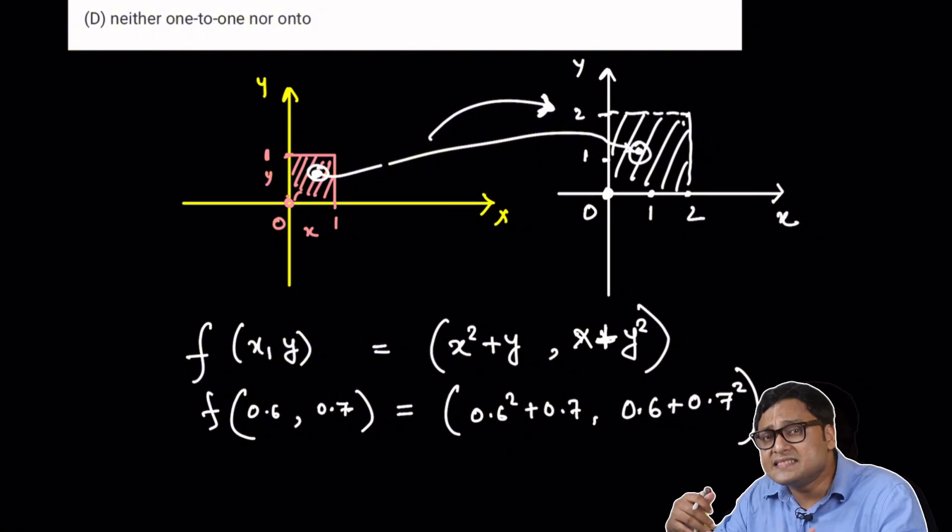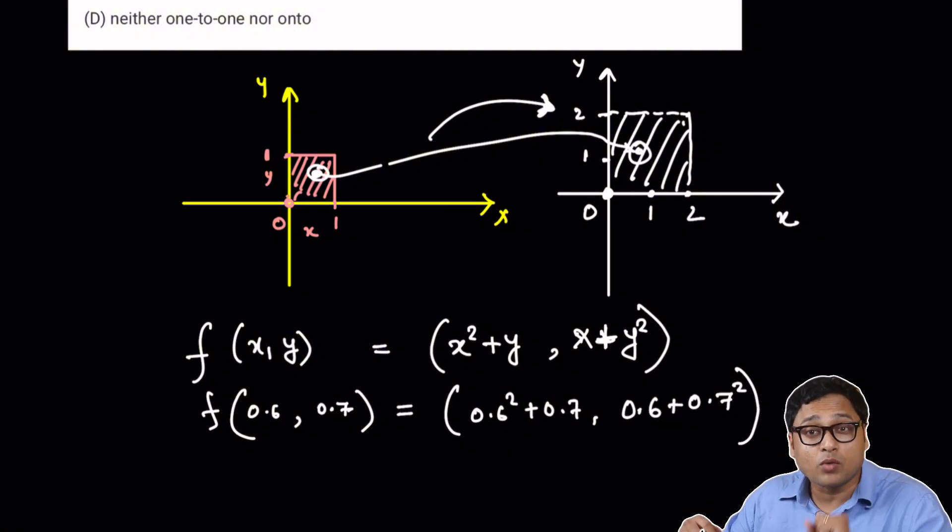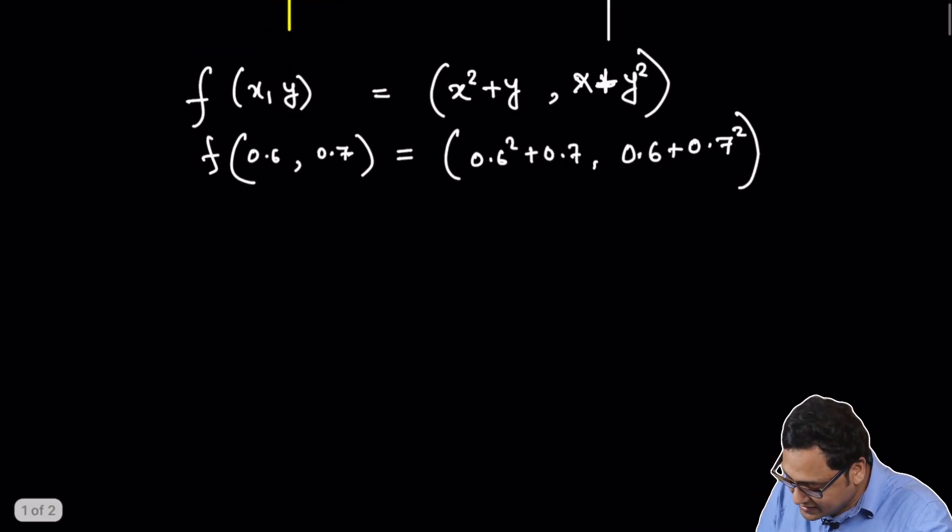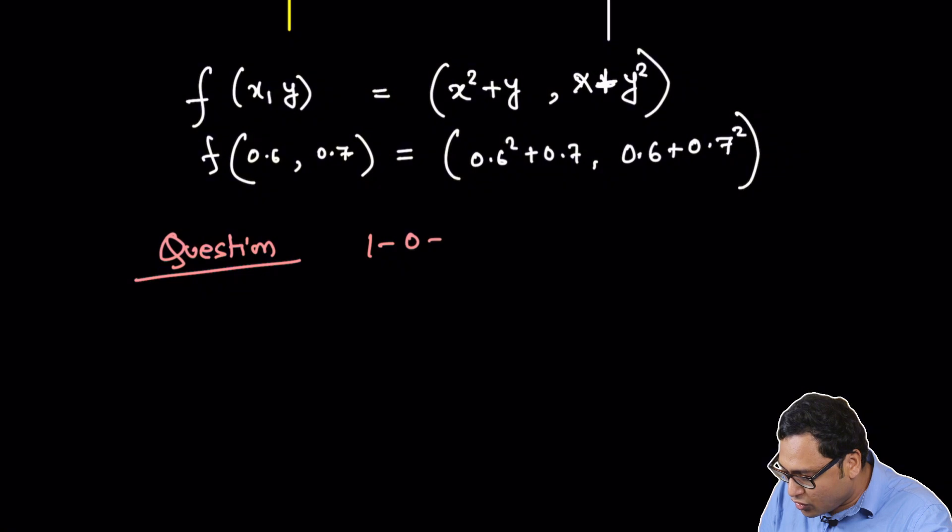The question is this: is this function one-to-one? Is this function onto? So I'll explain what that means. But here is the question. Is this function one-to-one? Is this function onto?